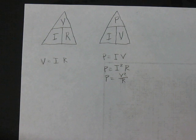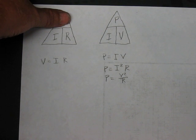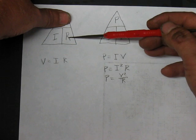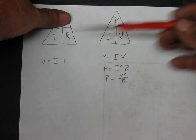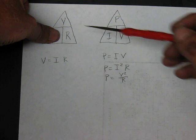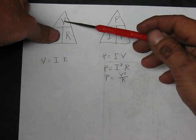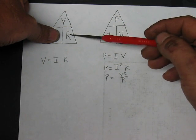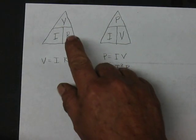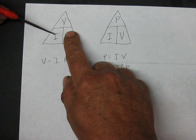Now, the nice thing about drawing it out, either in a circle or a triangle, is until you learn it and learn everything about it, the relationship, you can find any one of the values by covering it up. So, if I want the voltage, I just look and cover it up and it's I R or I times R. V equals I R. If I want current, then current will equal the voltage divided by the resistance, V over R. And then, if I want resistance, it's voltage divided by current.